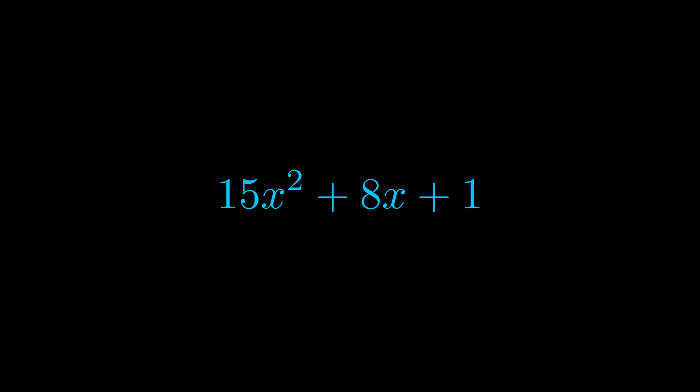Here we can see that our a value is the coefficient on the x squared term and our c value is the constant term. When we multiply these two values we get this value here in magenta.